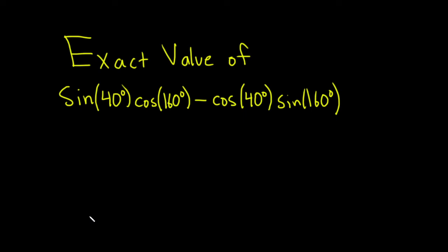Hello, in this problem we're going to find the exact value of this expression. So we have sine of 40 degrees times the cosine of 160 degrees minus the cosine of 40 degrees times the sine of 160 degrees.